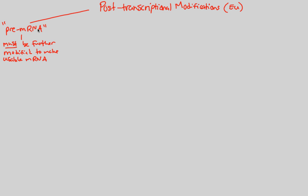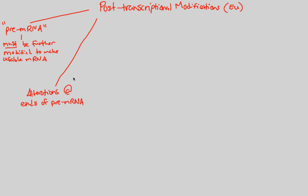Moving forward, what we have to do with this pre-mRNA molecule is make some alterations — some tailoring of sorts — specifically at the ends of the pre-mRNA molecule. The pre-mRNA has a 5' end and a 3' end, because the RNA polymerase reads the template in the 3' to 5' direction, making a new pre-mRNA transcript with both a 5' end and a 3' end. There are tailoring events that must occur at both of these ends of this immature mRNA.